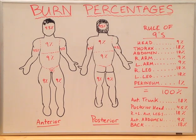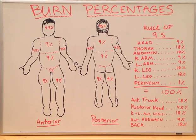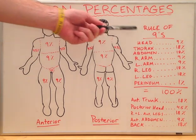Today's lecture is on burn percentages. As future physicians, you may encounter patients in the emergency room with severe burns on multiple parts of their bodies. You will need to rapidly determine and calculate the percentage of the body which has been burned. You can do this with something called the rule of nines.